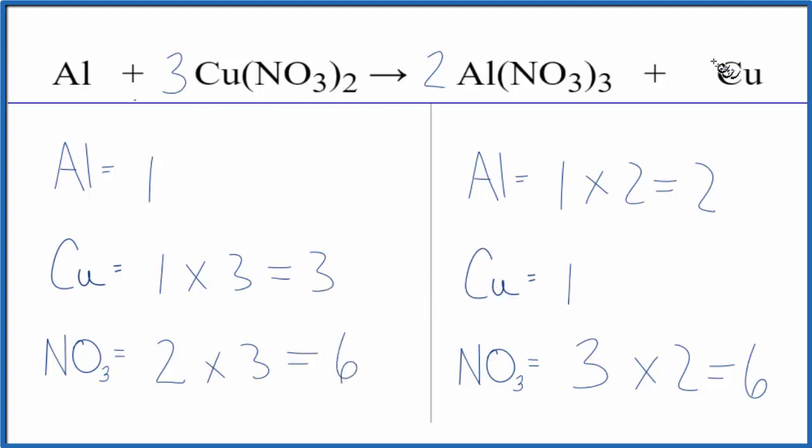And we can balance the coppers by just putting a three here. One times three that gives us three. And we have two aluminums, and then one put a two here. One times two that gives us two and this equation is balanced.